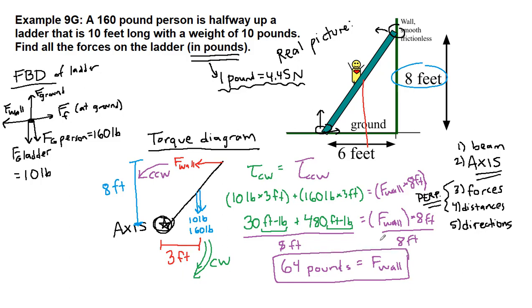Now the problem asks us to find all of the forces, so we just have to make sure we're checking on the force diagram now. The net forces in the x-direction are equal to 0, so 64 pounds minus friction equals 0. That means that 64 pounds is also the friction force acting on the foot of the ladder.